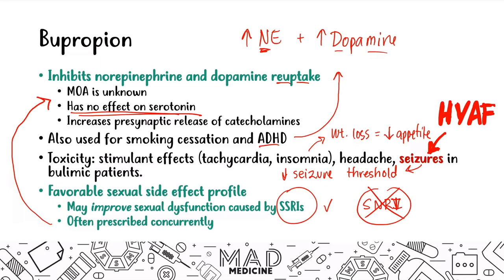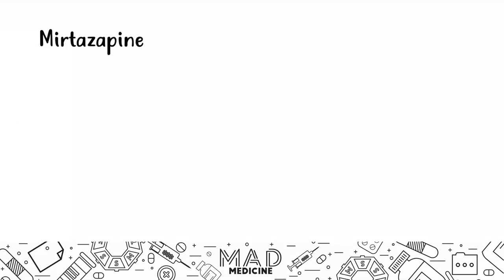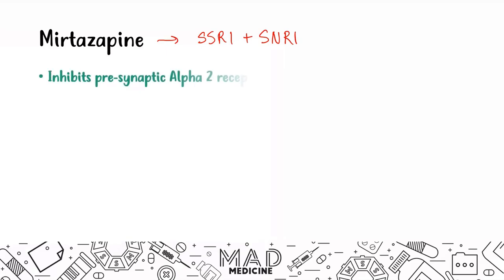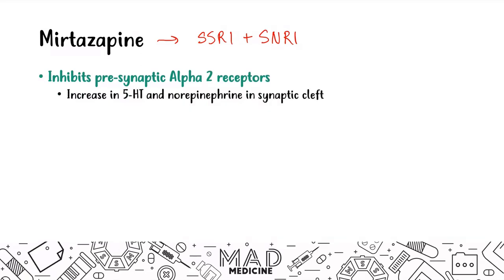Moving on to the next drug: mirtazapine. Mirtazapine inhibits the presynaptic alpha-2 receptors, which leads to an increase in serotonin and norepinephrine in the synaptic cleft — similar to an SNRI, though it is not actually an SNRI. It also antagonizes the postsynaptic 5-HT2 and 5-HT3 receptors, which increases serotonin activity, similar to an SSRI.